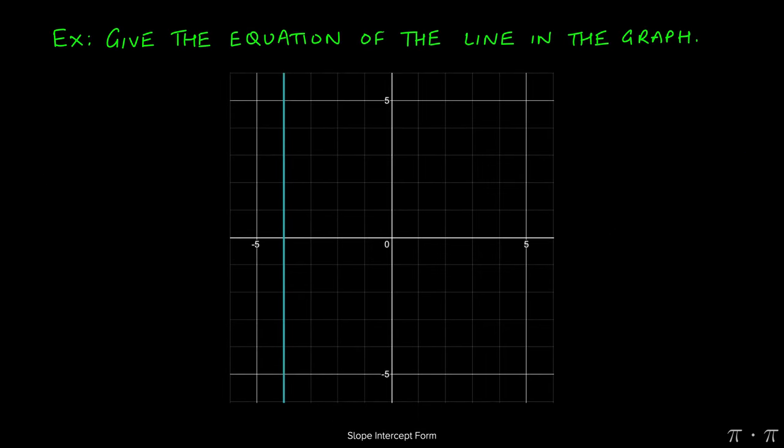Let's say we're asked to find the equation of the line in this graph. First couple of things we should observe: the line is four units to the left of the y-axis, so this x-coordinate is negative four.